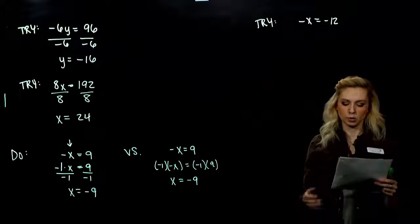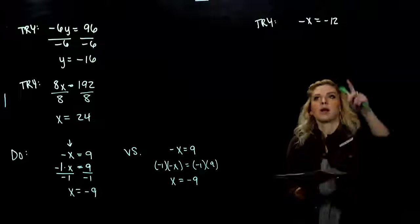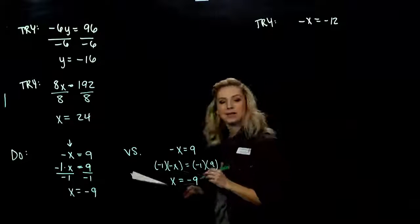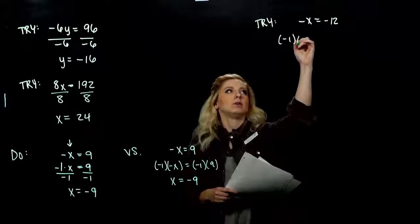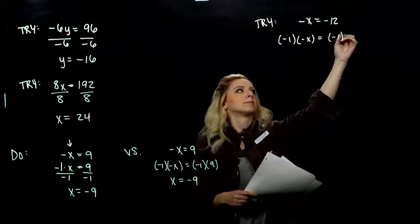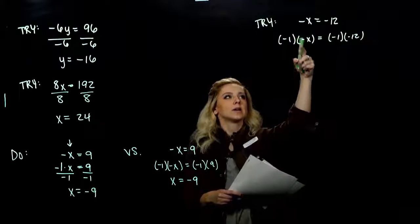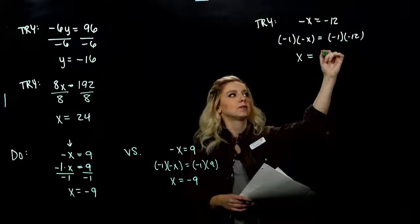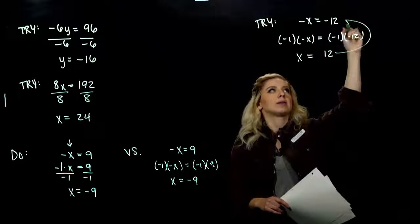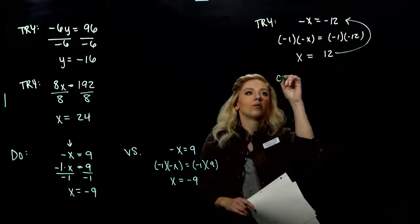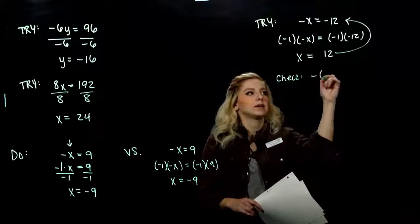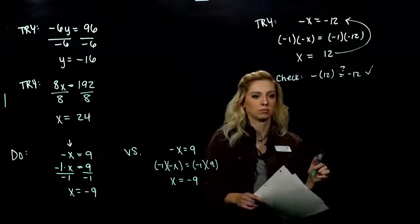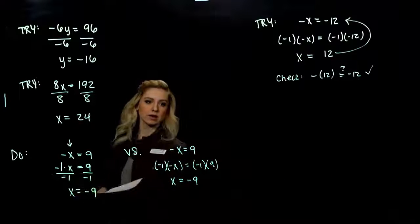Regardless of whether we multiplied by a negative or divided by a negative, we get the same result. So when you have that case, whichever one you're most comfortable with, run with it. Now try this one — I'm asking you to multiply on both sides, not use division. Multiplying negative 1 on both sides: negative times a negative gives me positive 1 times x, which is just x. Negative times a negative gives me a positive. So x equals 12, and if I plug that back into the original — negative 12 for x — equals negative 12. Yes.